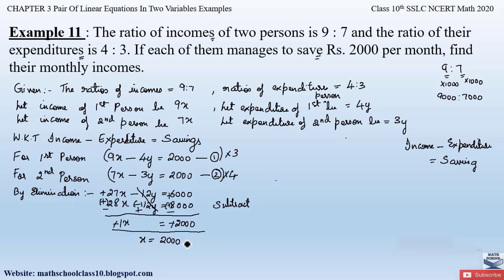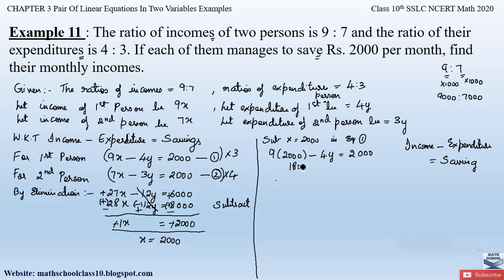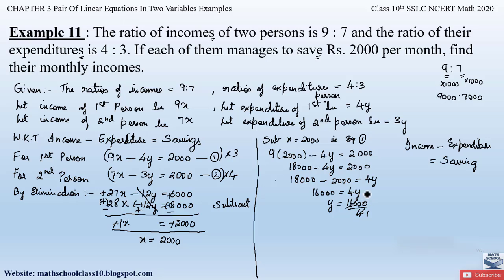Now substituting x equals 2000 into equation 1: 9 into 2000 minus 4y equals 2000. So 18000 minus 4y equals 2000. Rearranging: 18000 minus 2000 equals 4y, giving 16000 equals 4y. Dividing both sides by 4, we get y equals 4000. So x equals 2000 and y equals 4000.